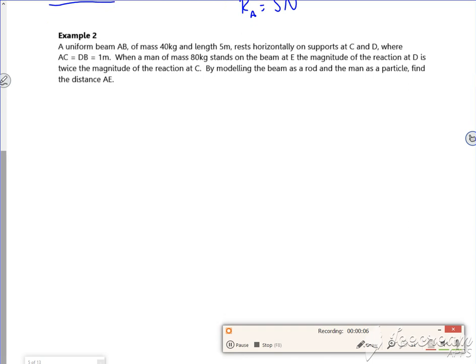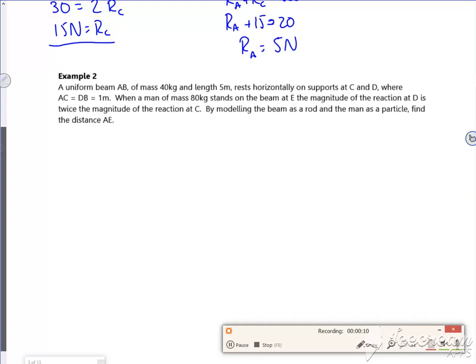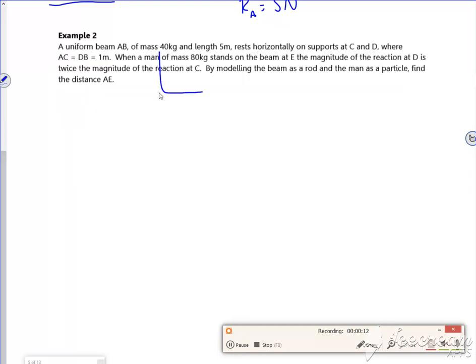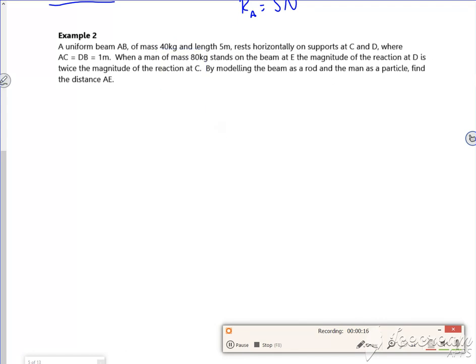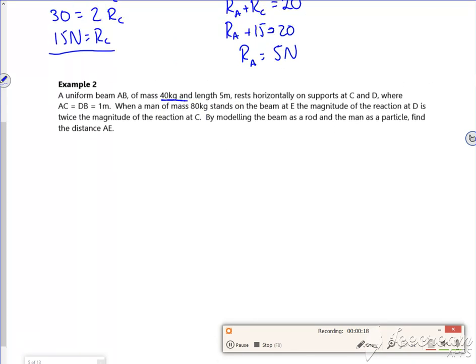It says a uniform beam AB of mass 40kg and length 5m. So for that information, at 2.5m in, 40g acts down. So it rests horizontally on supports at C and D, where A to C is 1m and D to B is 1m.